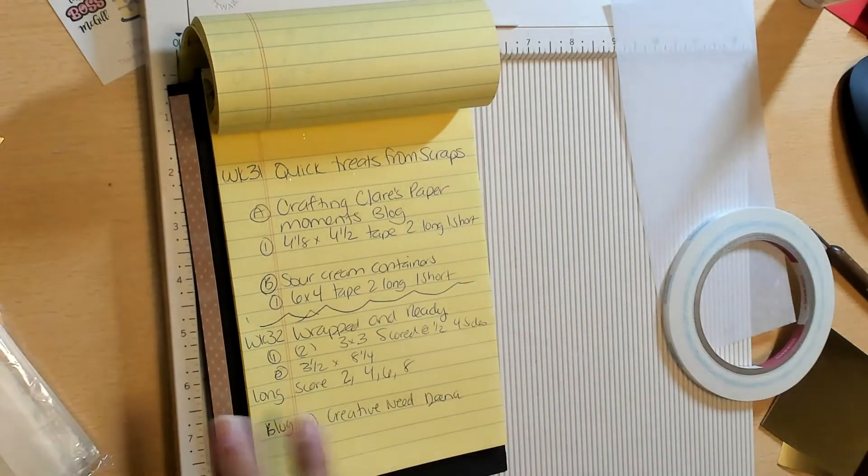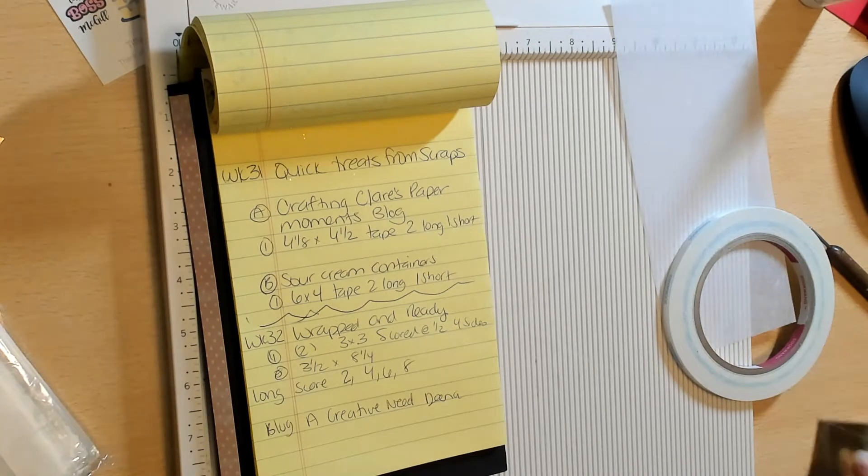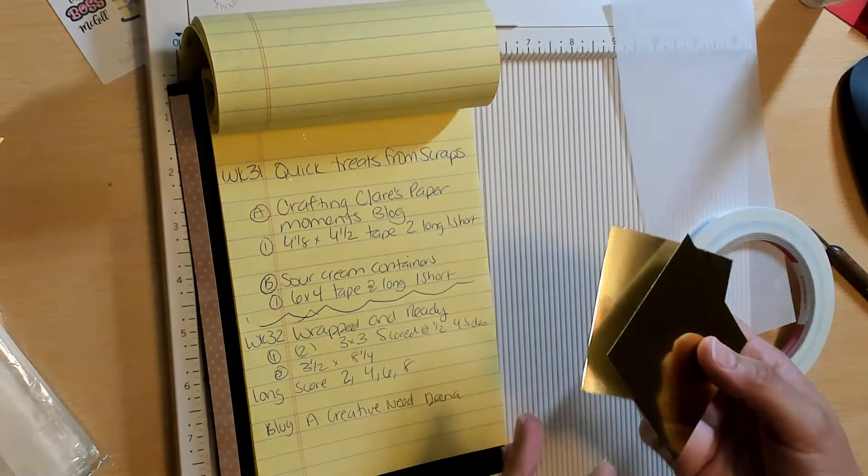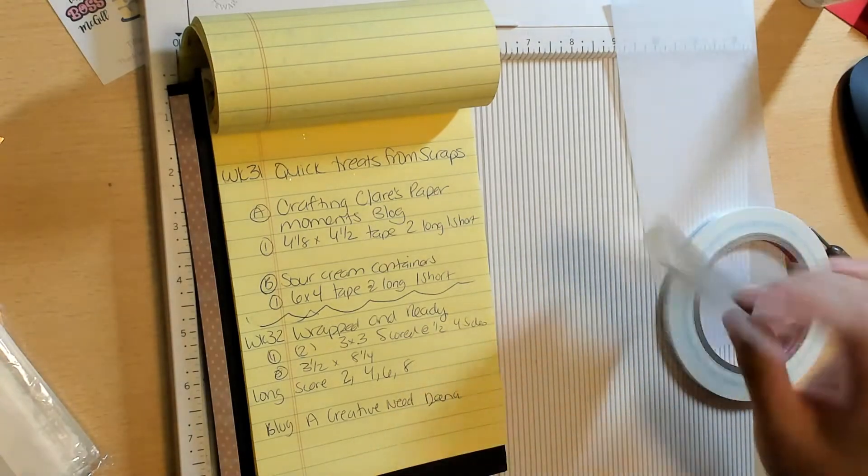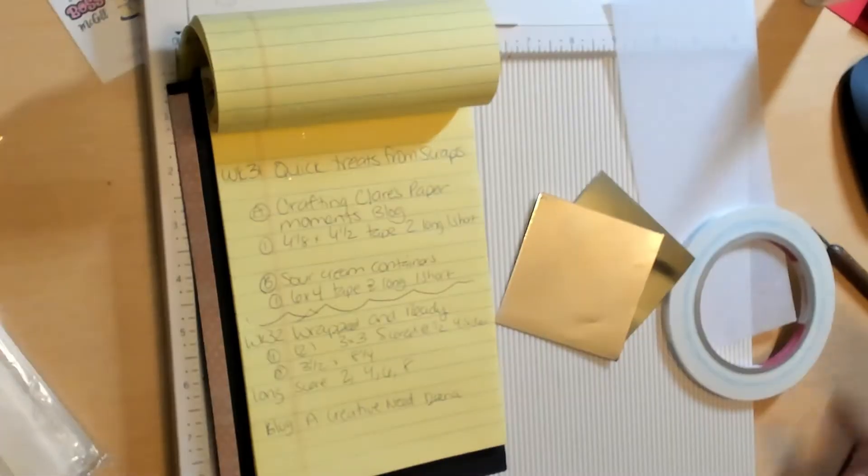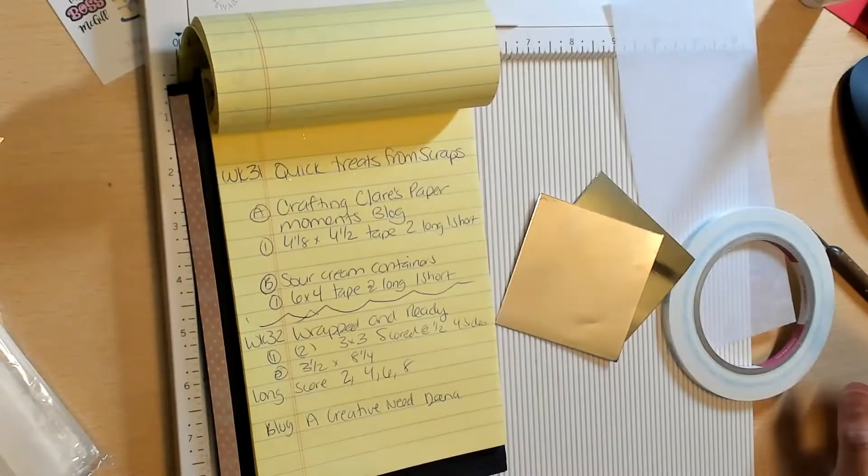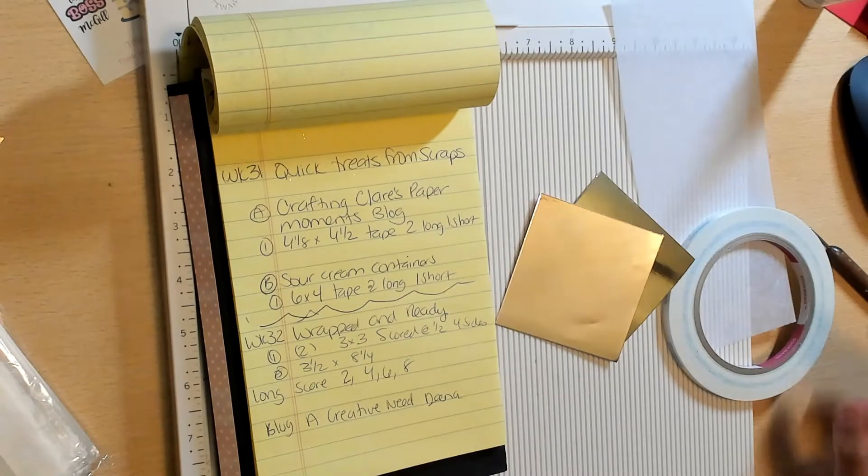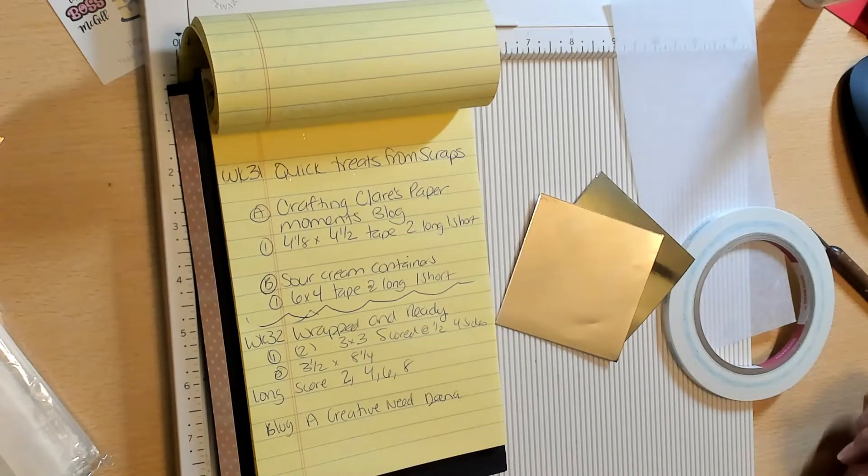Okay, so you need two pieces of three by three paper. I like the foil paper because it's just thinner. If you have those single-sided thinner scrapbook pages this would be perfect for it.